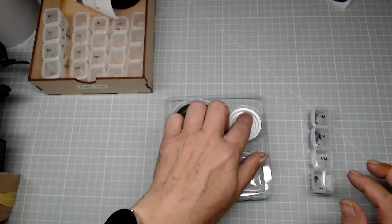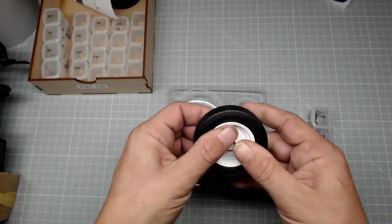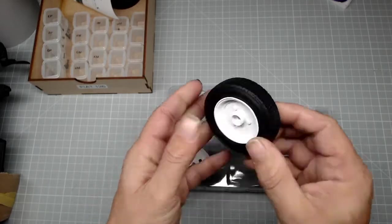We need to take the wheel assembly, insert it into the outer wheel, and push that in nice and hard so that it gets right in there.